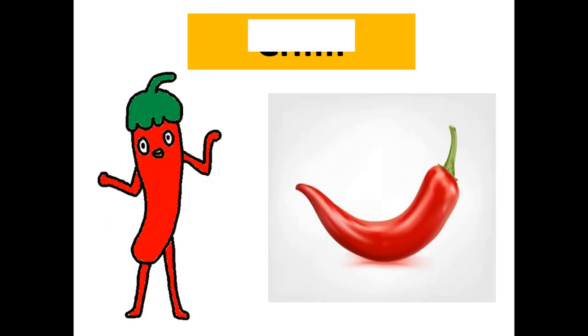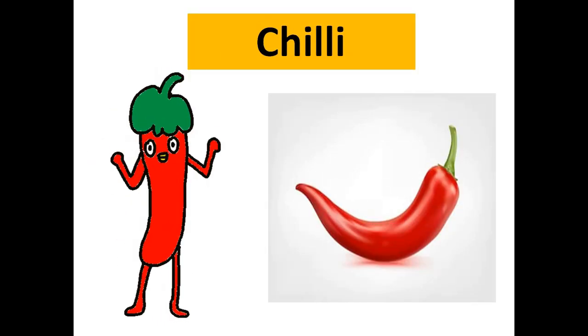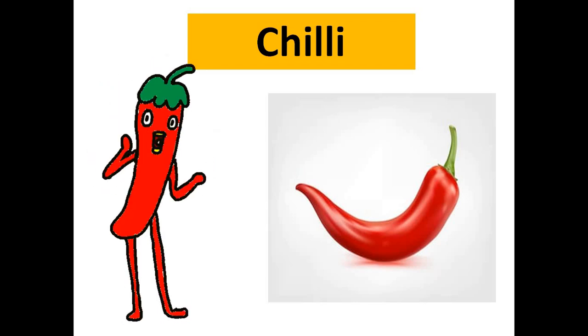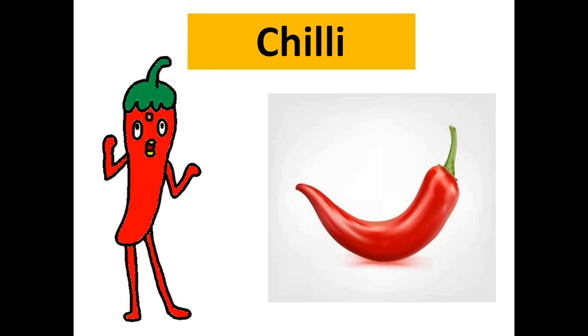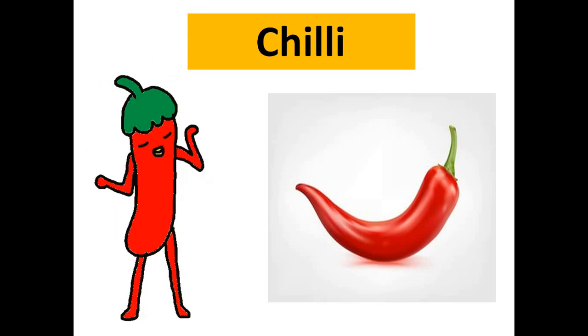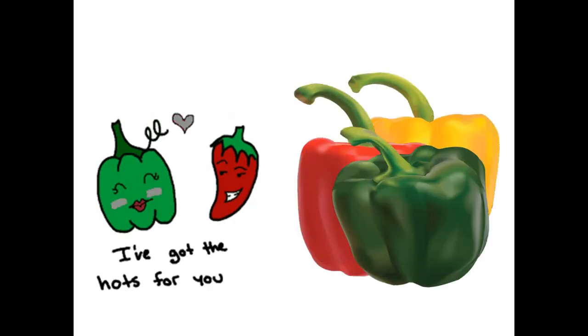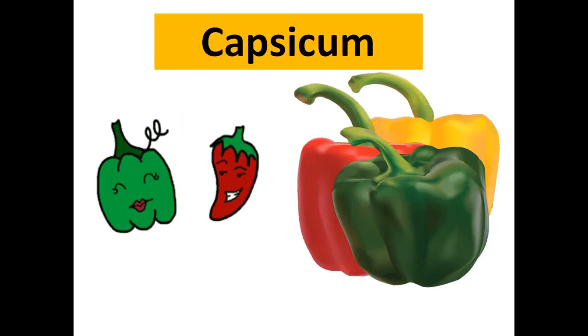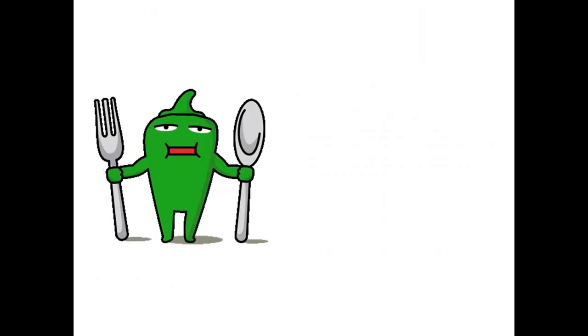Laal mirch — ise hum 'chilli' kahenge. Hari color ki hogi to 'green chilli.' Now next is shimla mirch, aur shimla mirch ko hum English mein kehte hain 'capsicum.'